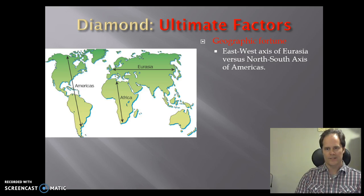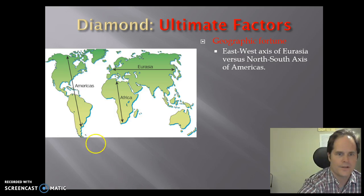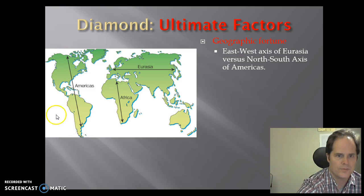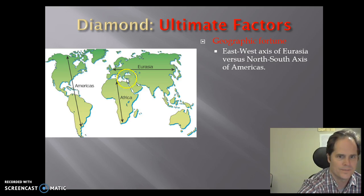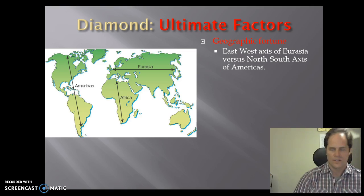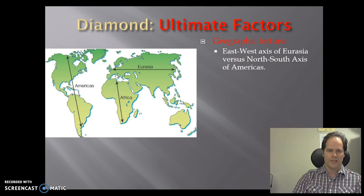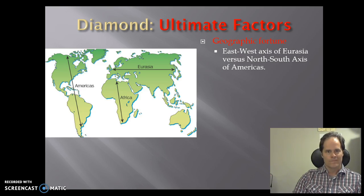In the Americas, by contrast, people tend to share meridians of longitude with each other because that landmass is based on a north-south axis. We could include Africa in the Eurasian discussion, but the problem is the Sahara Desert, which cuts off Sub-Saharan Africa from much of its interaction with the Eurasian landmass — which, along with the Atlantic slave trade, helps explain why Sub-Saharan Africa is relatively less developed than Eurasia today. So the east-west axis of Eurasia versus the north-south axis of the Americas is a key distinction.